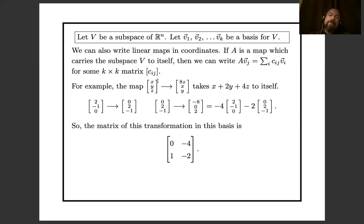Here is a linear map: (x, y, z) goes to (8z, x, y). You can check that this map takes the plane x + 2y + 4z to itself. Let's see what this map does to each of our basis vectors. The basis vector (2, -1, 0) turns into (0, 2, -1)—this 0 up at the top is 8 times 0. And the other basis vector (0, 2, -1) turns into (-8, 0, 2)—that -8 is 8 times -1—which we can re-express in our basis as -4 times the first basis vector minus 2 times the second basis vector.